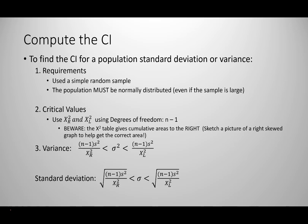First, check the requirements. The first requirement is that we must use a simple random sample. The second requirement is that the population must be normally distributed. Unlike some other confidence intervals, for standard deviations and variances we absolutely must have a normal distribution — even if our sample is large, we still must have that normal distribution.